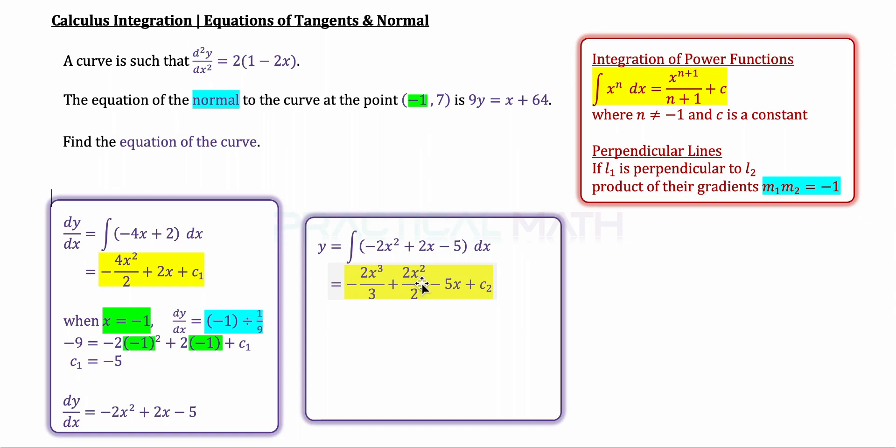Integrating 2x should give us 2x²/2. Using the same formula highlighted in yellow, integrating -5 should give us -5x + c₂, and c₂ refers to the arbitrary constant.